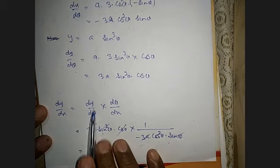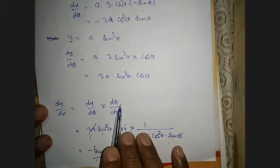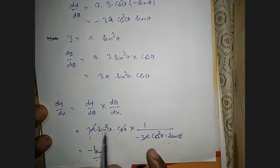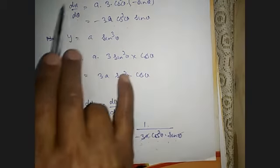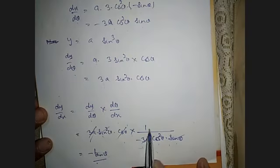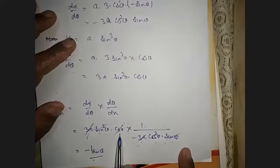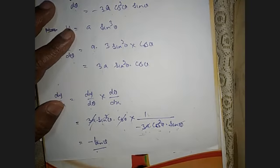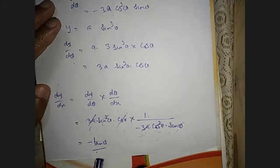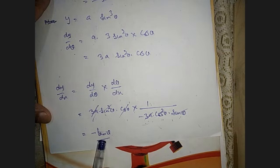Now to find dy/dx, using the chain rule: dy/dx = dy/dθ × dθ/dx. dy/dθ = 3a·sin²θ·cosθ, and dθ/dx is the reciprocal of dx/dθ, so 1/(−3a·cos²θ·sinθ). The 3a constants cancel, sinθ cancels with sin²θ leaving sinθ, and cosθ cancels with cos²θ leaving cosθ in the denominator. What remains is sinθ/cosθ with a negative sign, which is −tanθ. Therefore, dy/dx = −tanθ.